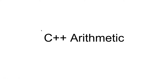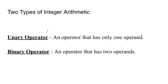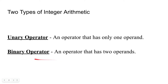Welcome. In this video, we will talk about arithmetic in C++. There are two types of arithmetic that we can perform: the first being unary arithmetic via the unary operators, and we can also perform binary arithmetic via binary operators.